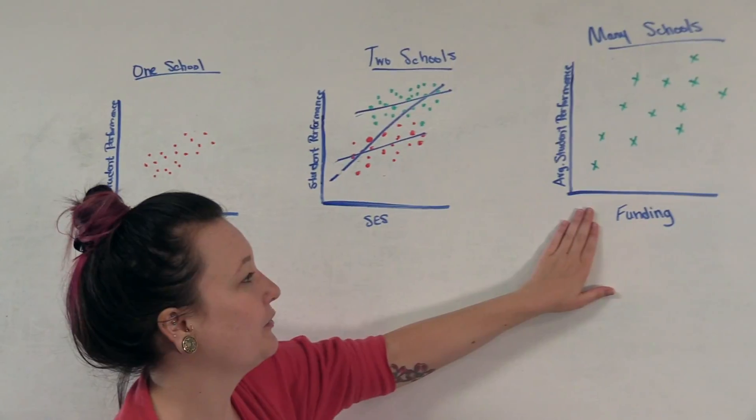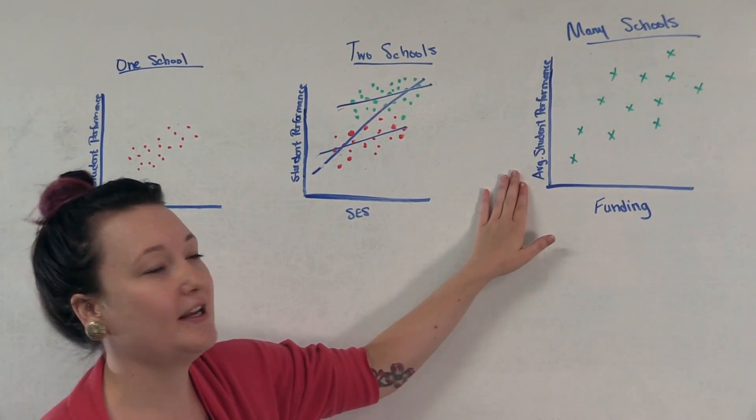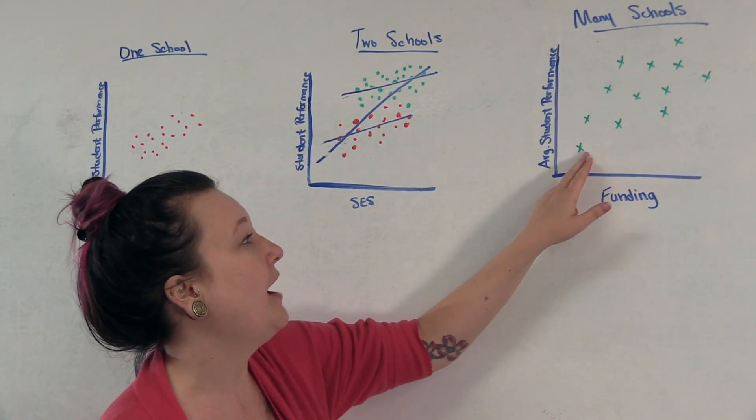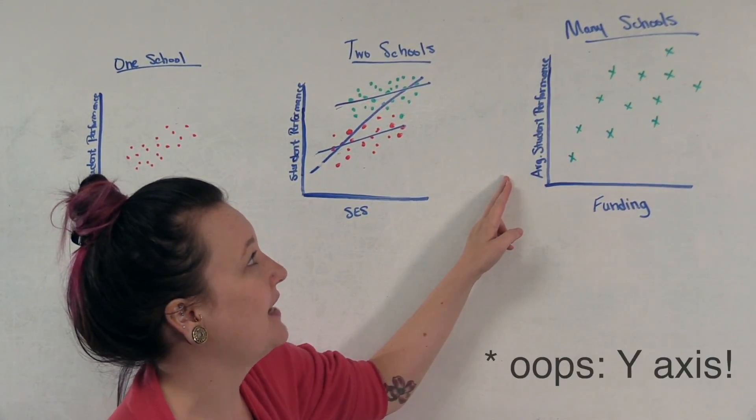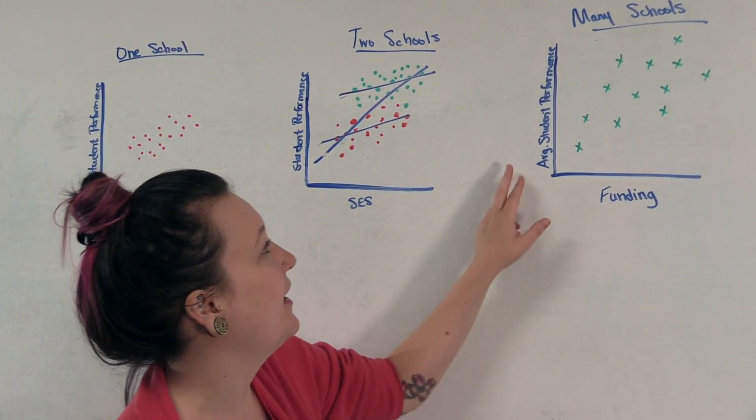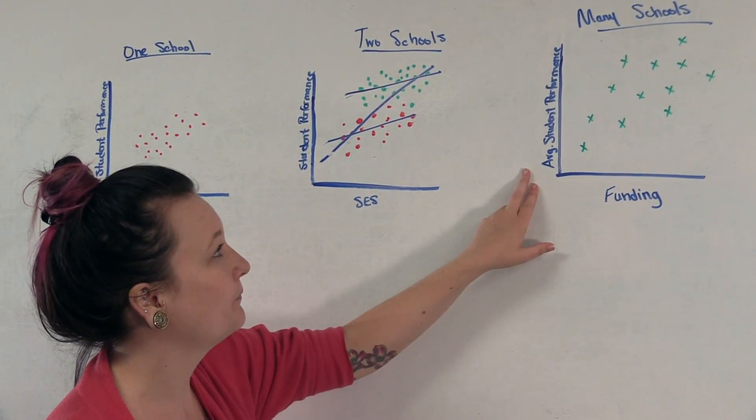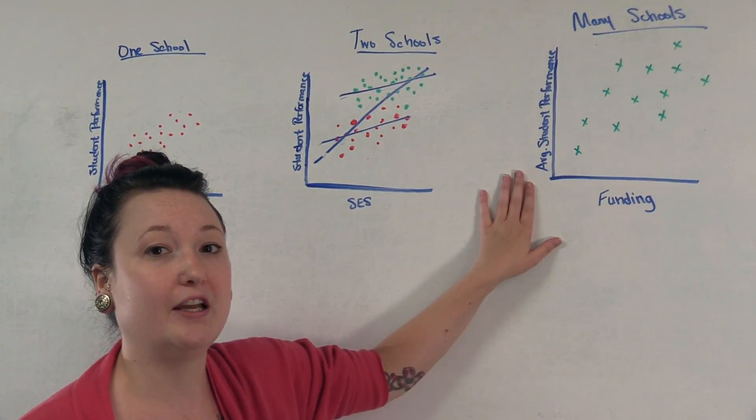We can start to estimate the relationship between school funding and student performance. Here, since we're going to be looking at averages across many schools, that's going to be the predictor on the x-axis. Here we can also see a positive relationship between funding and average school performance. But with this presentation, we're only looking at the level two relationship.